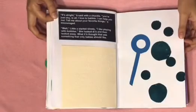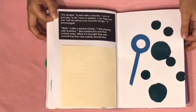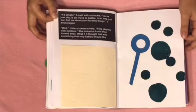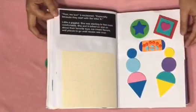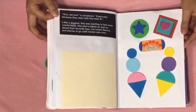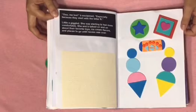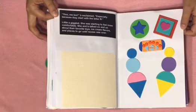It's all right, B said with a chuckle. You're just shy is all. I love to babble. I can help you out. Tell me about your favorite things, B encouraged. Well, Little A started slowly. I like playing with bubbles. She looked at B and then looked away. What if B thought that was something only a baby should like? In this case, we have a bubble wand with vinyl, teal bubbles. Ooh, me too, B exclaimed, especially because they start with the letter B. Little A giggled. She was starting to feel more comfortable.